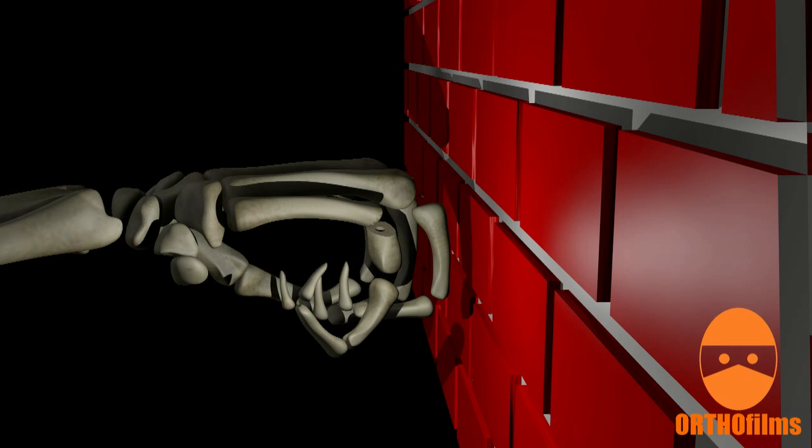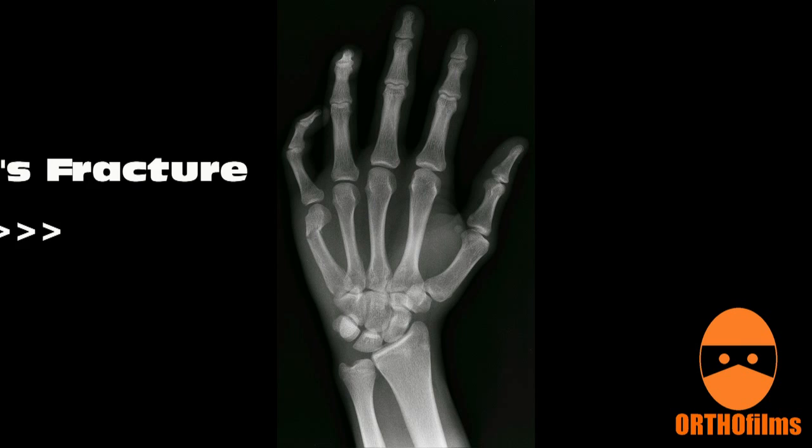The metacarpal bones are the long bones of the hand. Punching a hard object can break the fifth metacarpal, the bone just below the small finger. This is known as a boxer's fracture.